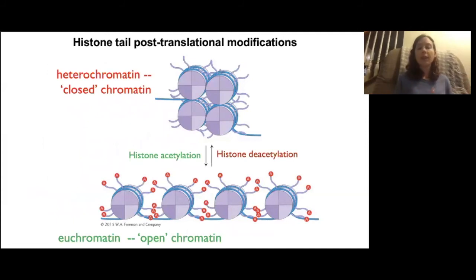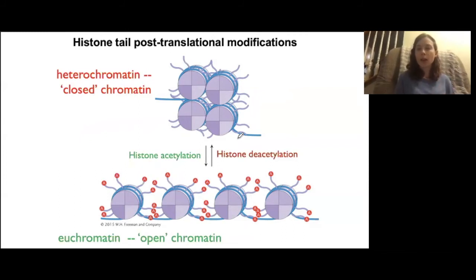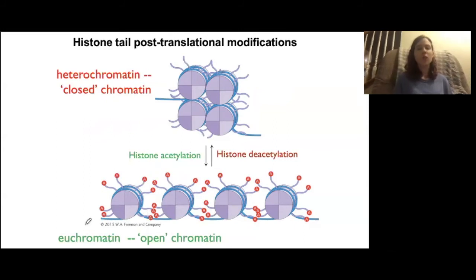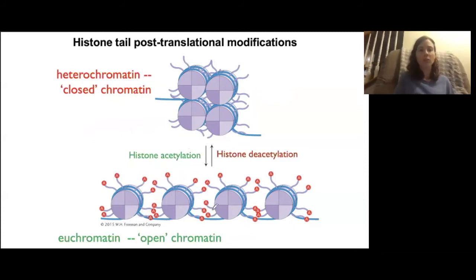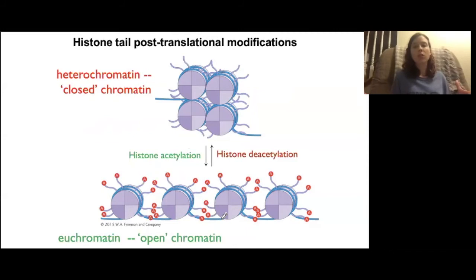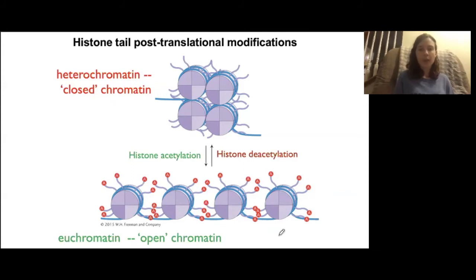This illustration sums up the last slide. At the top we have really densely packed chromatin — our heterochromatin. Following the arrows going down, we see histone acetylation occurs, and after that the chromatin is much more open — not super densely packed, with some stretches of DNA that transcription machinery could access. It is now more like euchromatin. And going back the other way, if we remove all these acetyl groups, we're back to our very closed conformation again.